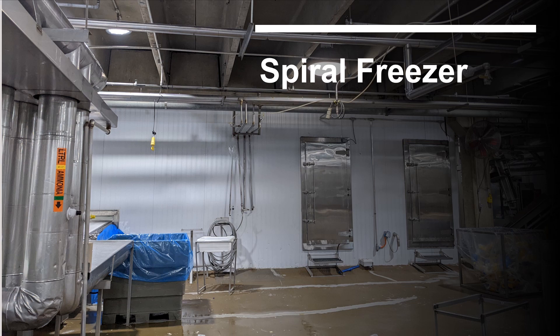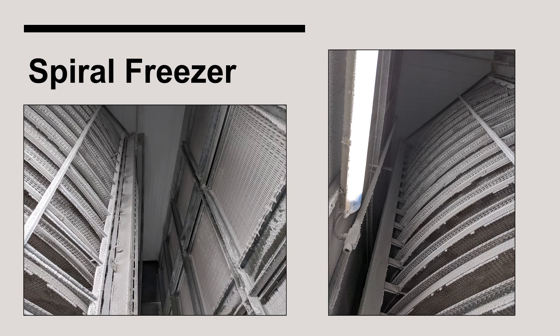A spiral freezer is used to quick freeze a food product at very low temperatures. Inside the spiral freezer enclosure there is a spiraling conveyor that the product being frozen must travel on. Large air cooling evaporators are used to remove the heat from the product. Spiral freezers can operate as low as minus 40 degrees Fahrenheit.